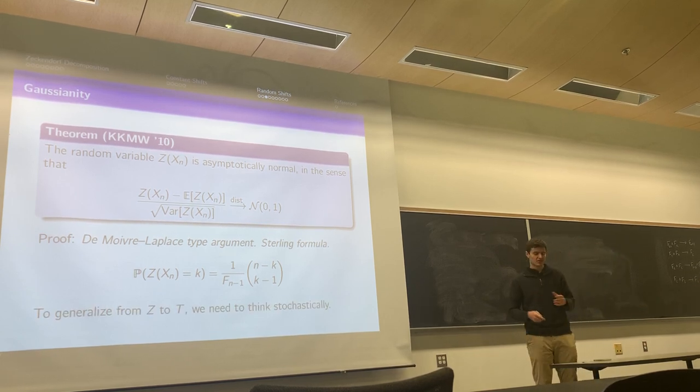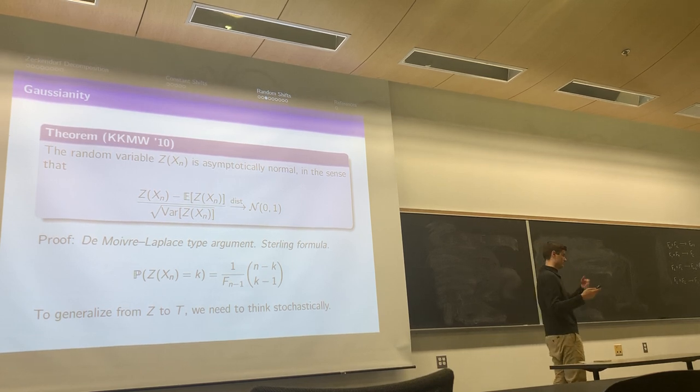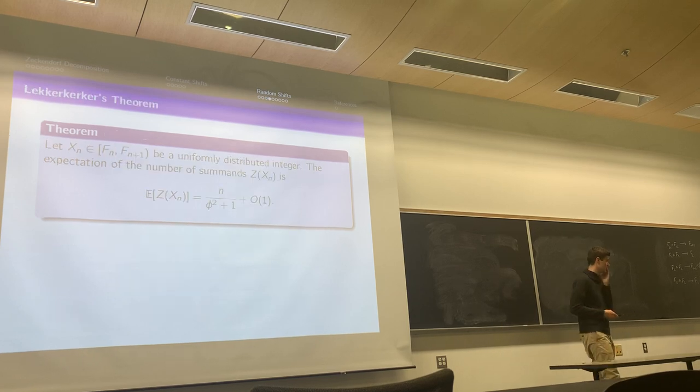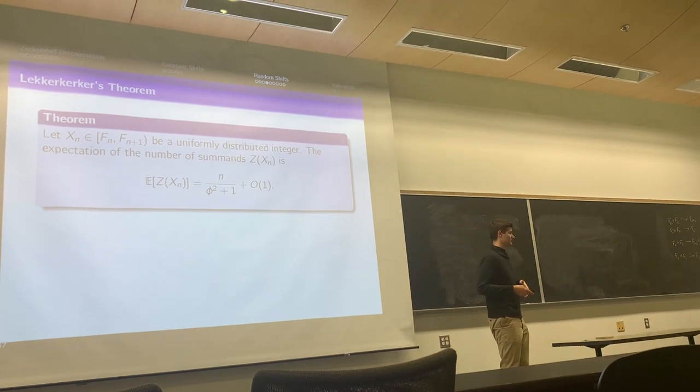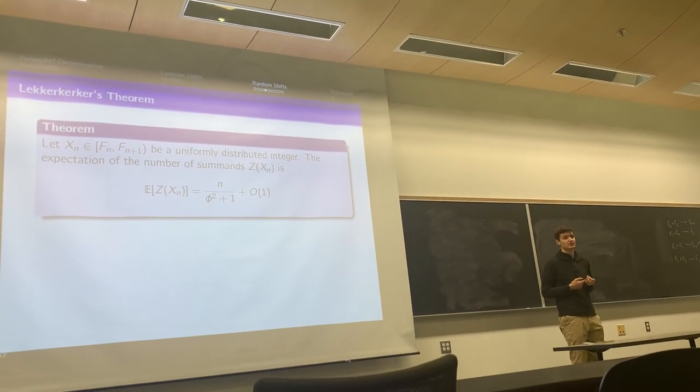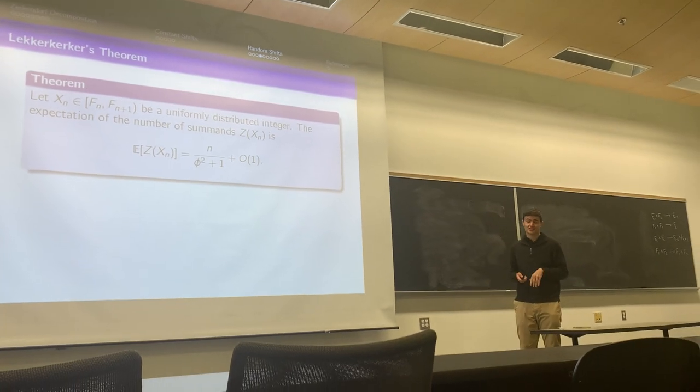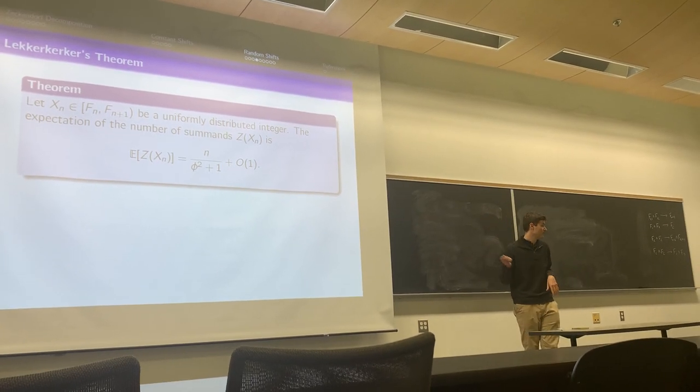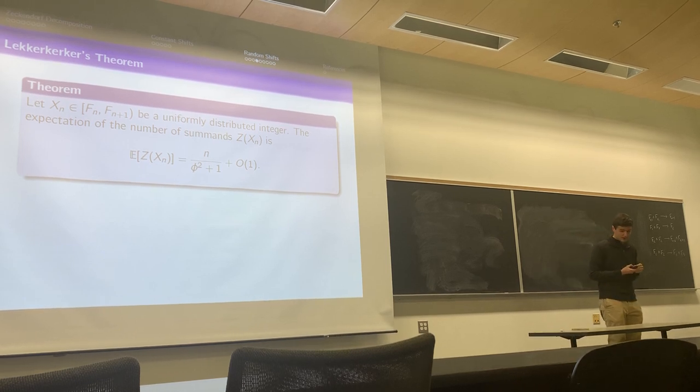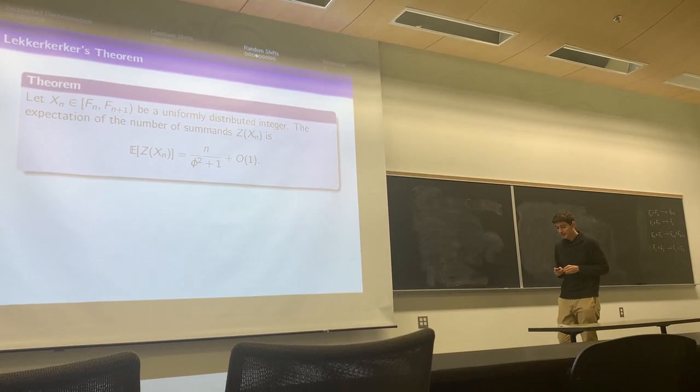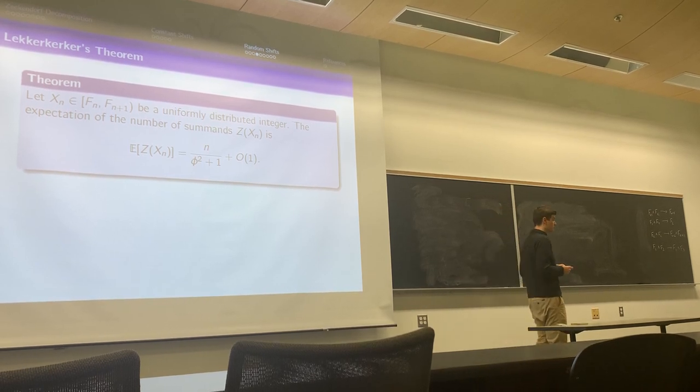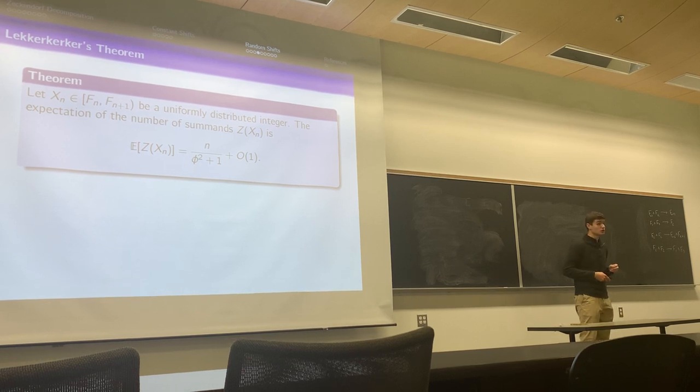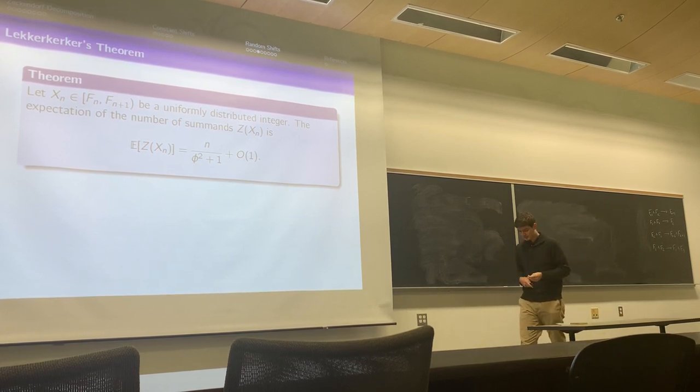But to generalize from Z to T, when we're adding two strings on top of each other and there's complexity when moving things around in the Zeckendorf game, there's some dependence between the things, we need to think a bit more stochastically. To see as an example of how to think stochastically, let's recall this theorem from Lekkerkerker in 1951. Lekkerkerker actually discovered Zeckendorf's theorem, not Zeckendorf. While he discovered it, he noticed that the expected number of ones, if you have an n-digit random integer, is n over φ² plus one, meaning a positive proportion of number ones, with a big O(1) error term.